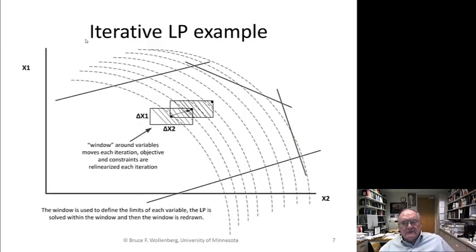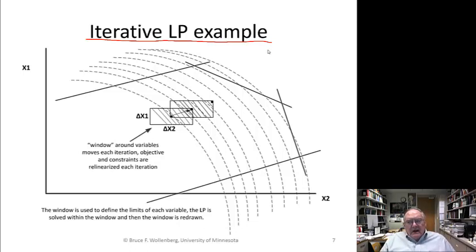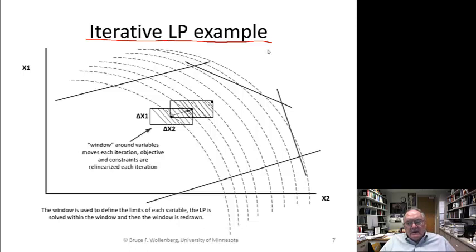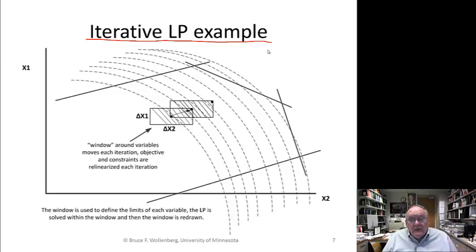Now here's what happens in the iterative LP. I want to talk about something very important: it's much harder to get your problem to always meet the inequality constraints than it is to follow the gradient along the optimal path. It turns out that methods that do a good job of meeting inequality constraints — the LP is really one of the best for doing inequality constraints. You basically make the problem into a series of small LPs where you've linearized everything.